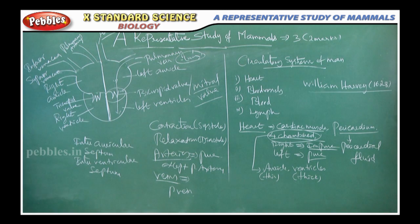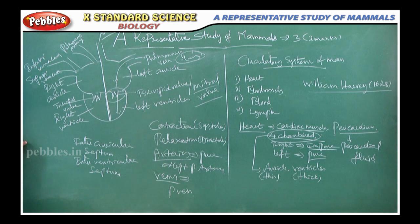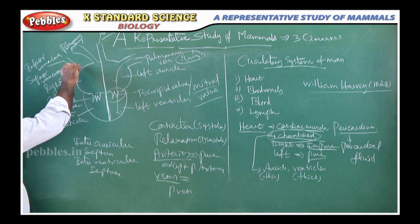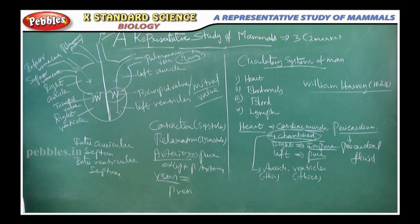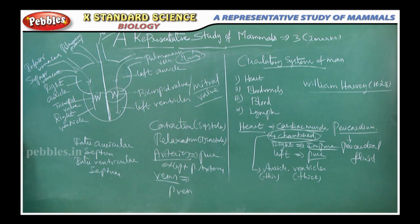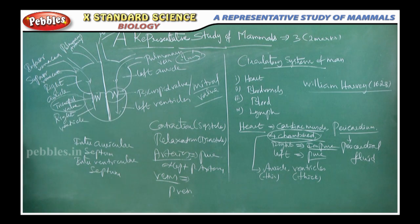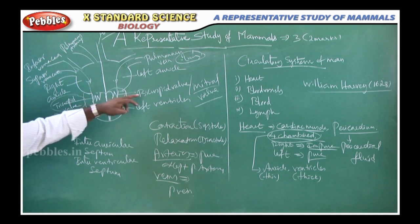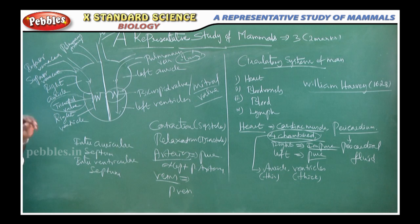On the right side, the superior vena cava and inferior vena cava collect deoxygenated blood from the anterior and posterior regions of the body and pour it into the right auricle. From the right auricle, the blood passes to the right ventricle with the help of the tricuspid valve. So on the left side it is the bicuspid valve, and on the right side it is the tricuspid valve.